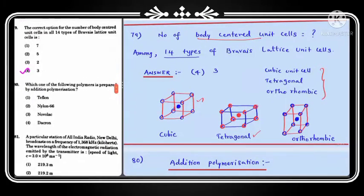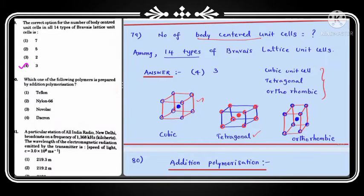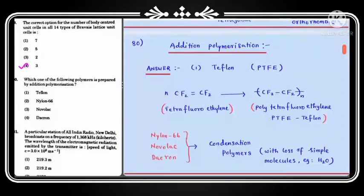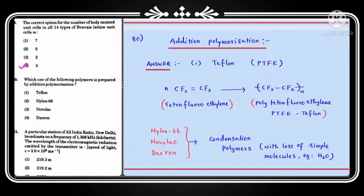Question number 80: which polymer is prepared by addition polymerization? The answer is option 1, Teflon. Addition polymerization is a kind of polymerization in which monomer molecules are simply added to each other without elimination of any simple molecules. Teflon is prepared by addition polymerization because during its preparation the monomers are simply added — nothing is eliminated.